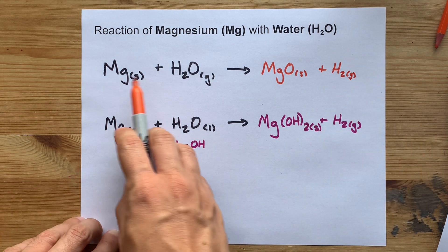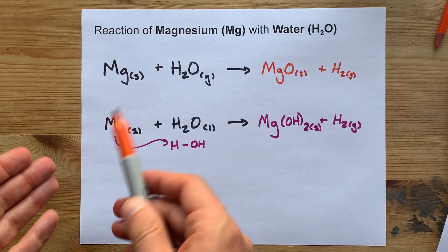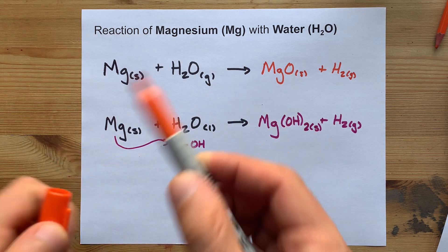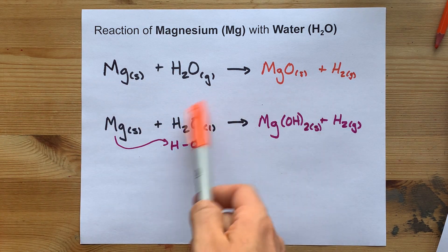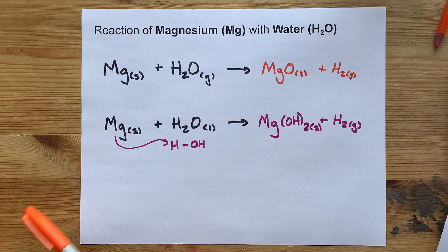If you wrote this as your answer and your teacher didn't specify states, you can probably get away with it. Just fight them on it. Go get a real source other than me that that happens. See if you can grab that extra mark.